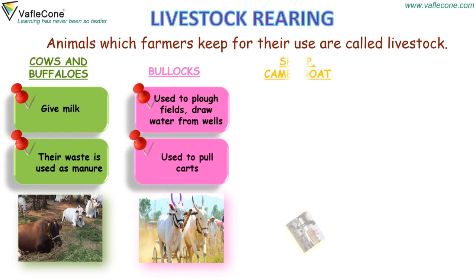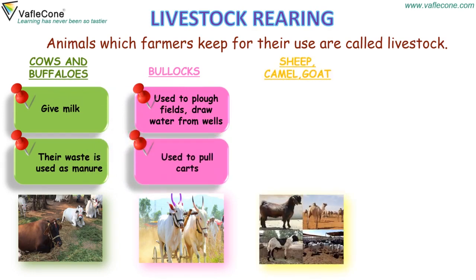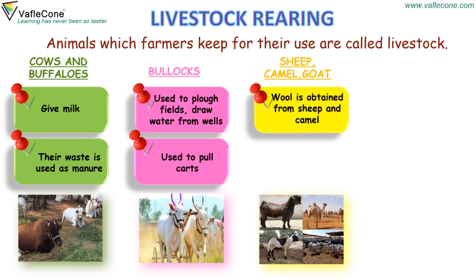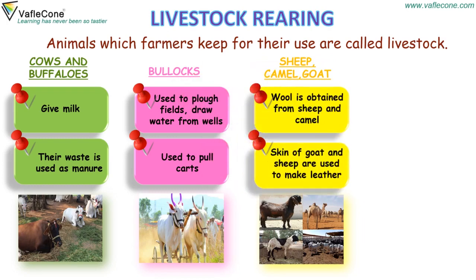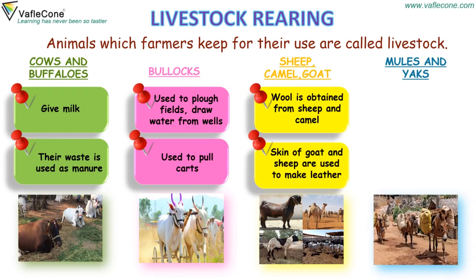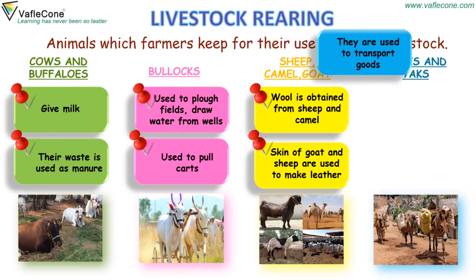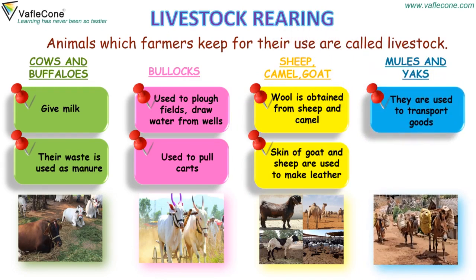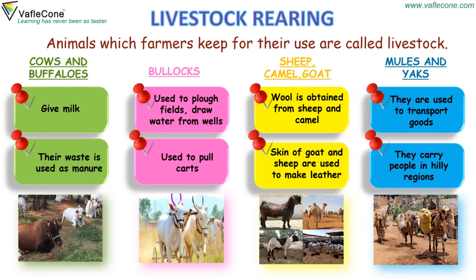Sheep, camel and goat: wool is obtained from sheep and camel. The skin of goat and sheep is used to make leather. Mules and yaks are used to transport goods and carry people in hilly regions.